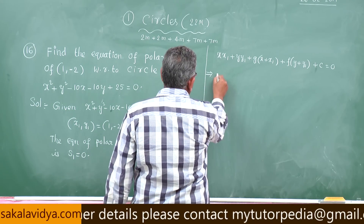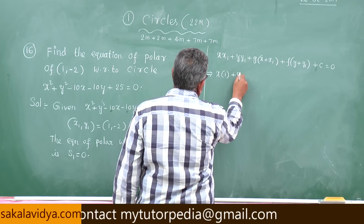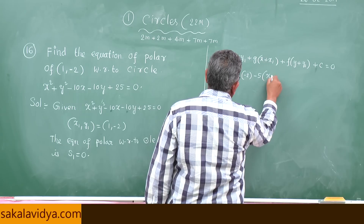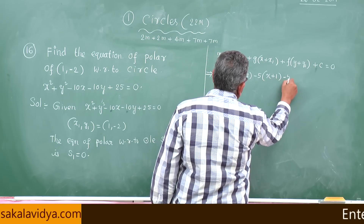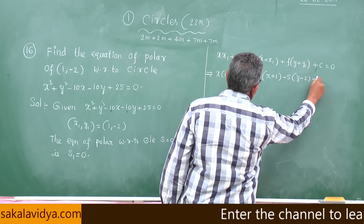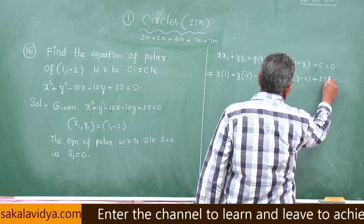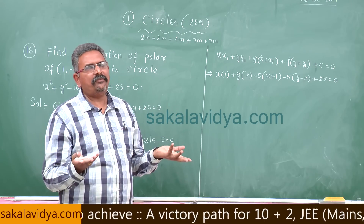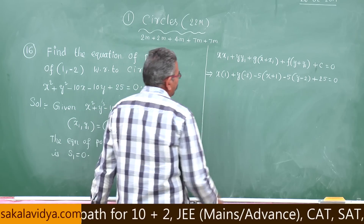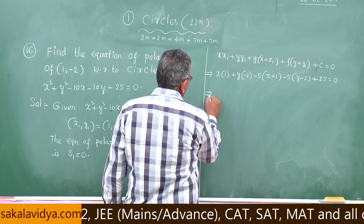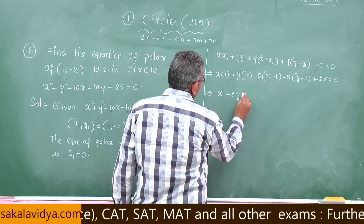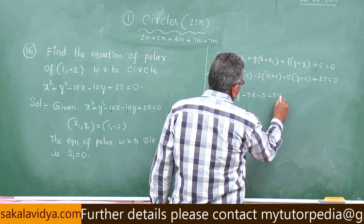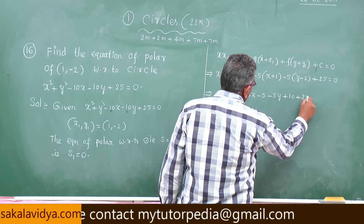Substituting x₁=1, y₁=-2, g=-5, f=-5, c=25: x×1 + y×(-2) + (-5)(x+1) + (-5)(y-2) + 25 = 0, which gives x - 2y - 5x - 5 - 5y + 10 + 25 = 0.